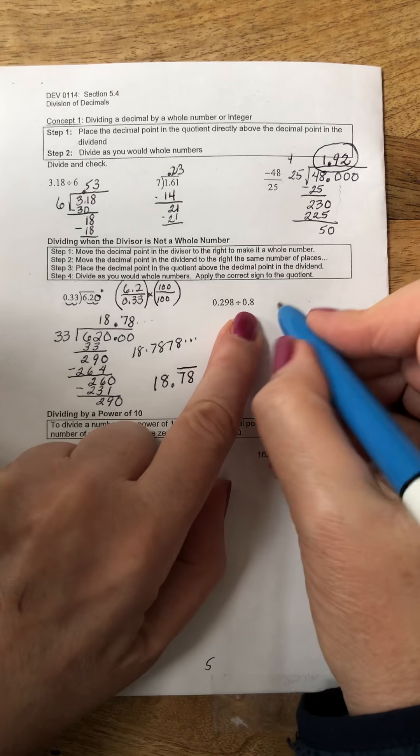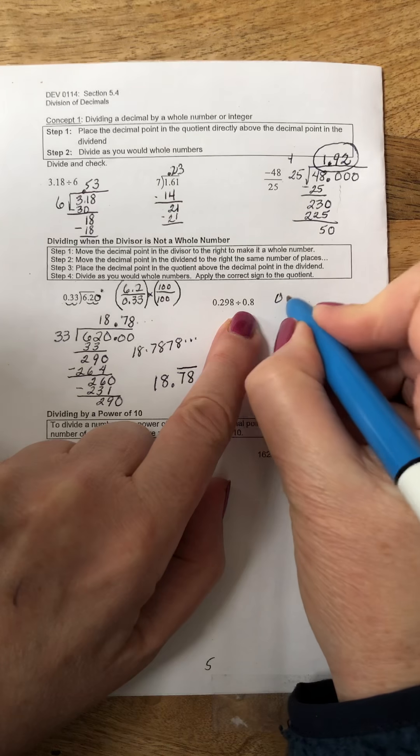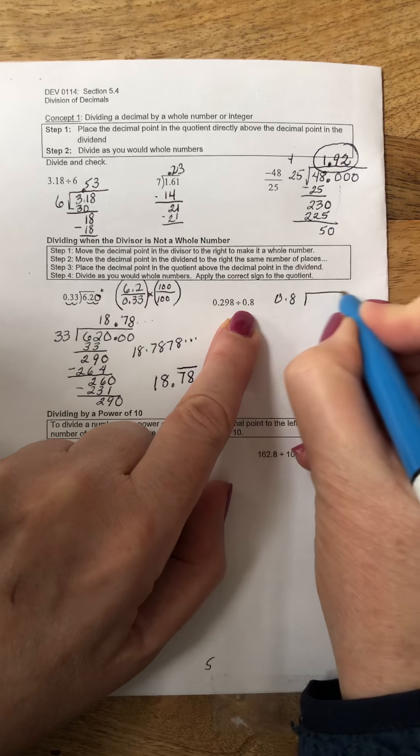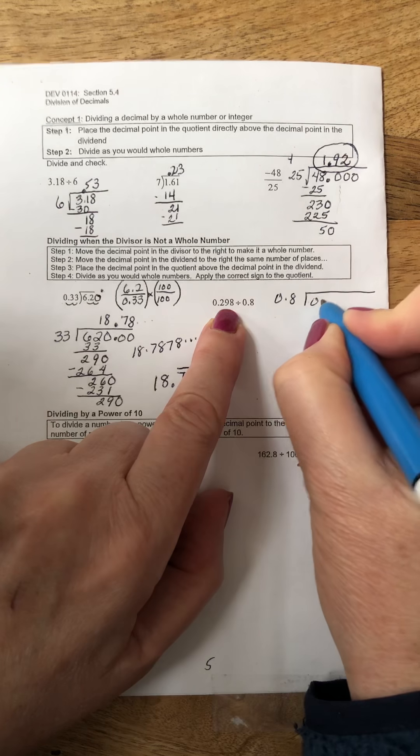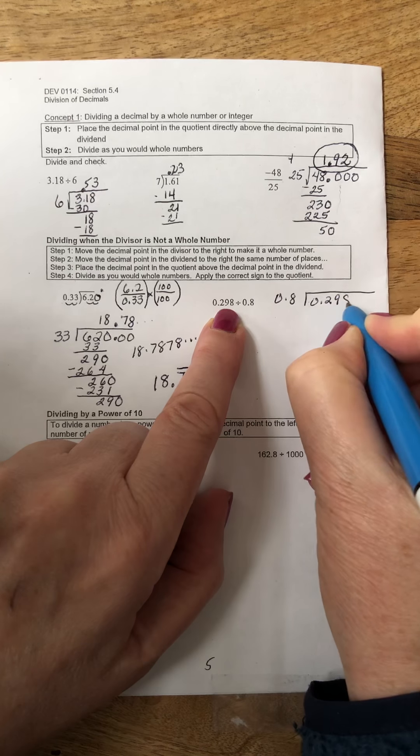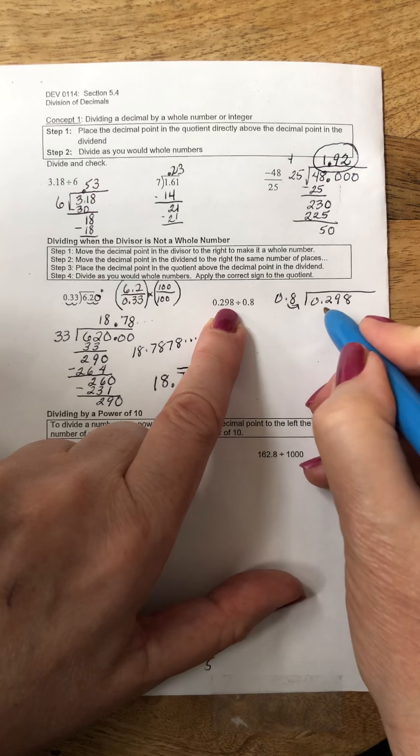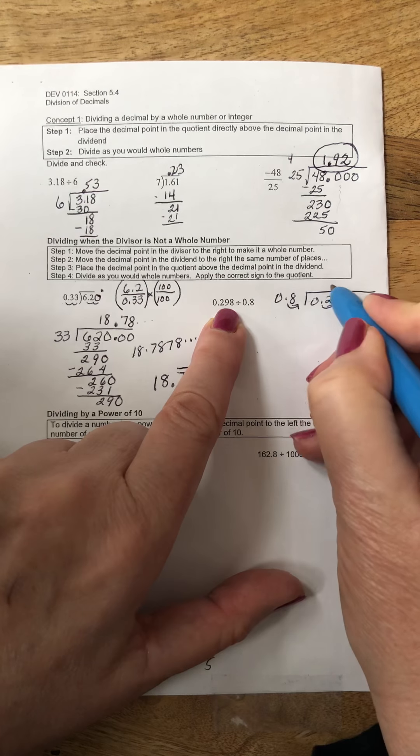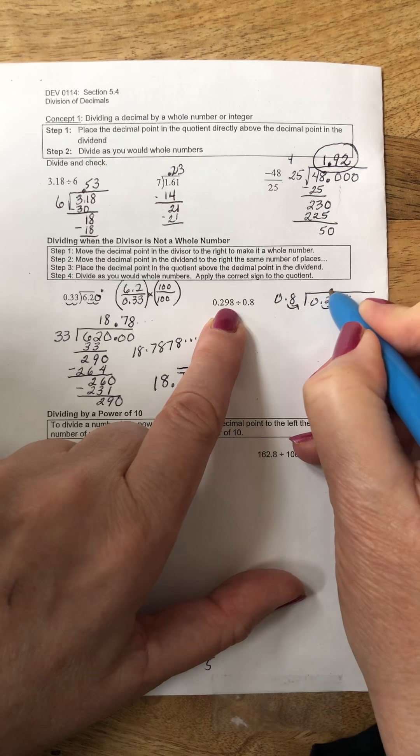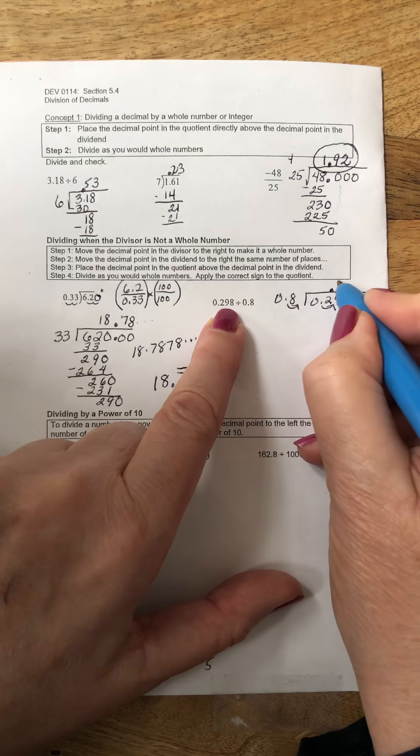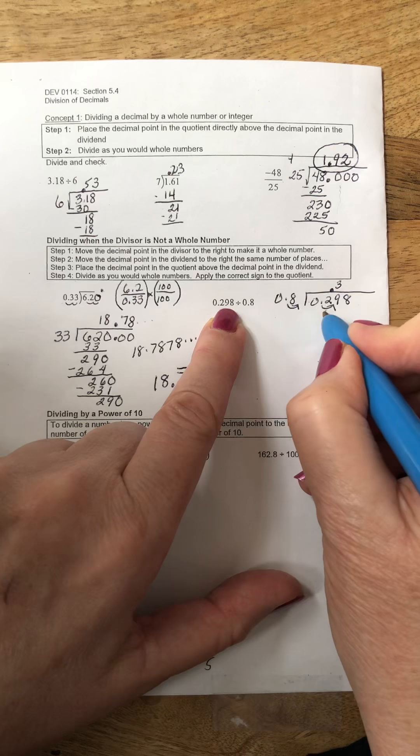Last, I'm going to divide 0.8 into 0.298, so I have to move my decimal point one place in the divisor and dividend. This is going to go in three times.